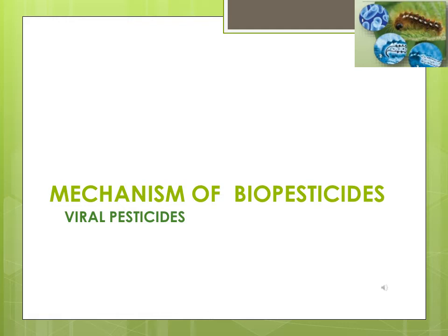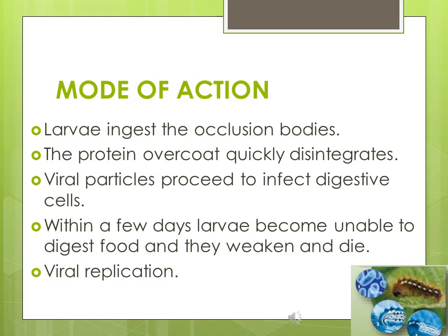Now I would like to discuss the mechanism of action of viral biopesticides. The viral biopesticides become active only after susceptible larvae ingest the occlusion bodies. In the larval gut, the protein overcoat disintegrates very quickly and the viral particles proceed to infect digestive cells. Within a few days, larvae become unable to digest food — they weaken and eventually die. The replication of viruses occurs in the nuclei or cytoplasm of the target cell.